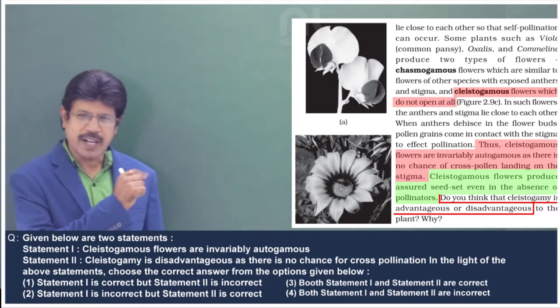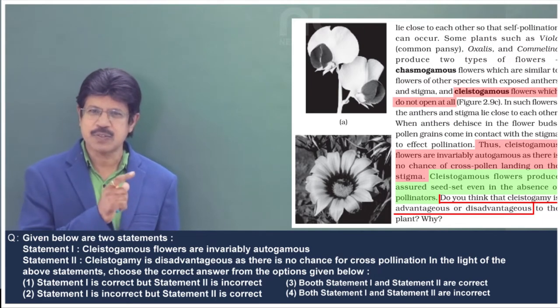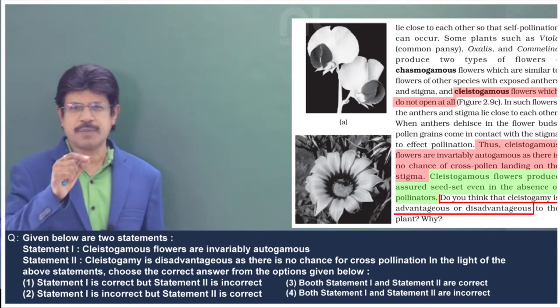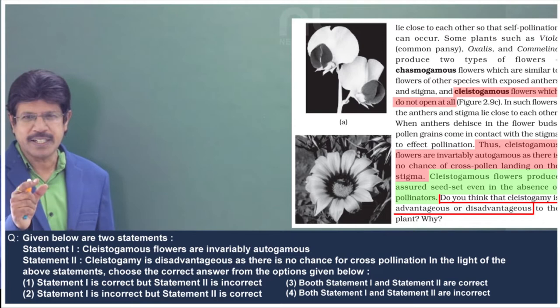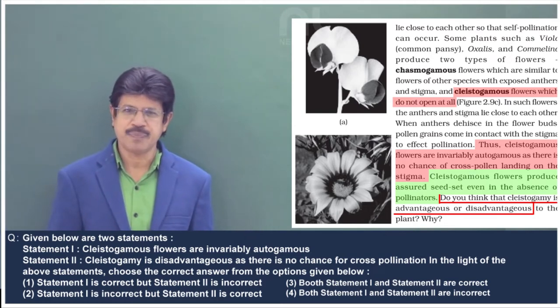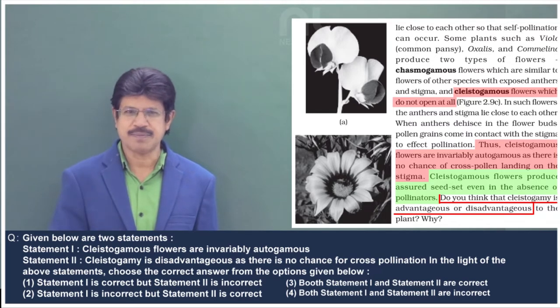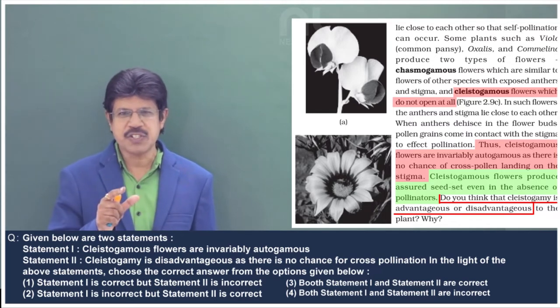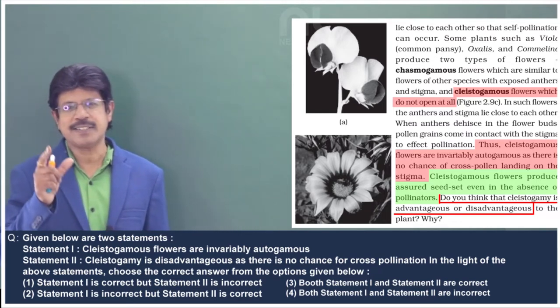As per the NCERT textual lines, cleistogamous flowers are invariably autogamous. Because the flowers do not open, they should be bisexual. Self-pollination is invariable, that is 100%.